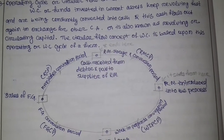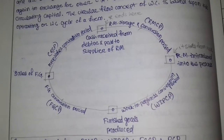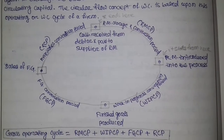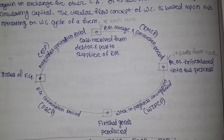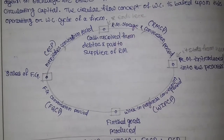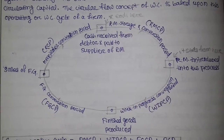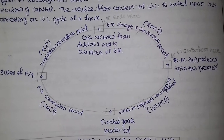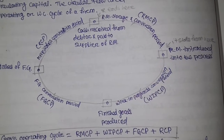This is also known as revolving or circulating capital, and it is based upon the operating cycle of a firm. The cycle starts with raw material introduced into the process, then work-in-progress conversion, then finished goods production, then sale of finished goods, then receivable conversion periods, then cash received from debtors and paid to suppliers, and then raw material is purchased again — this process continues in circulation and never stops.